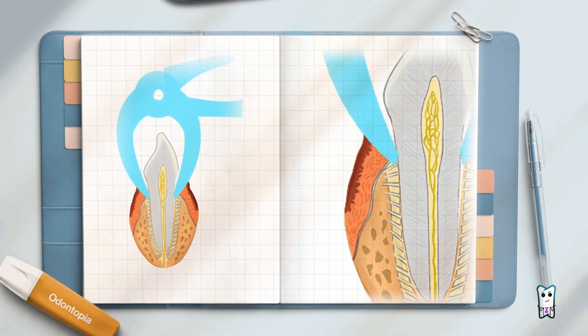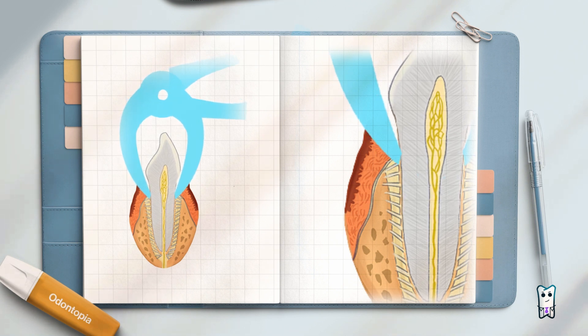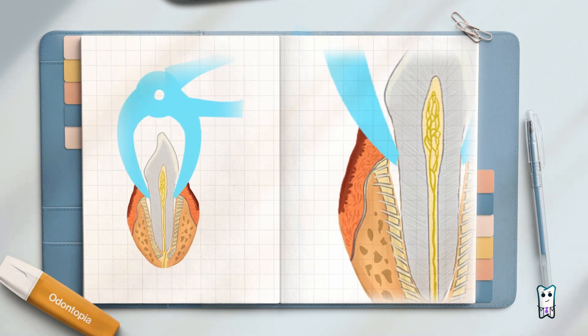The idea is, as the tooth becomes more and more mobile, to increase the amplitude of the luxations.